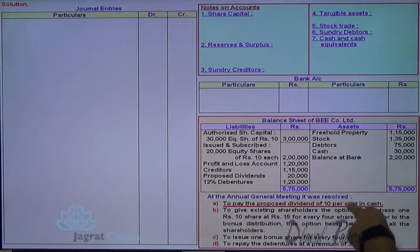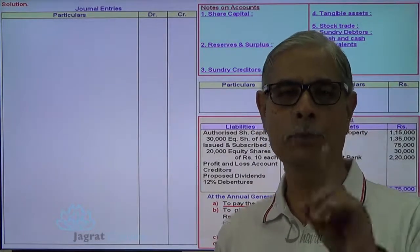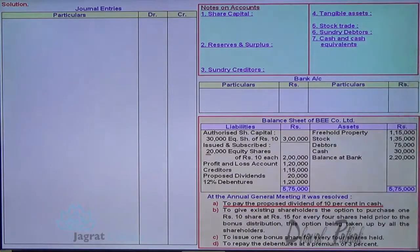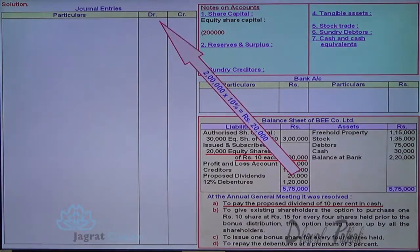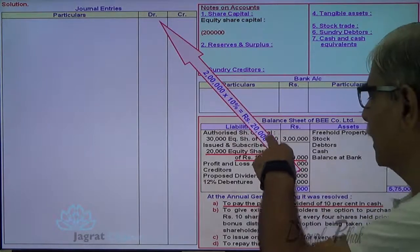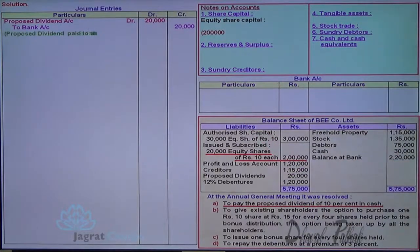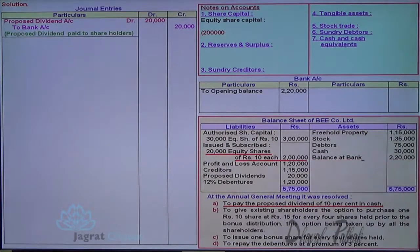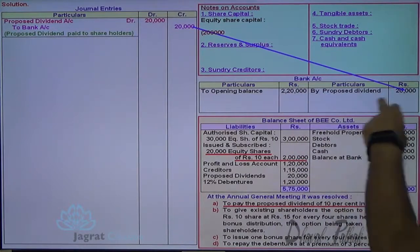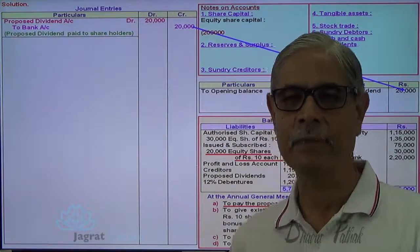To pay proposed dividend 10% in cash: proposed dividend is 20,000. Share capital of 2,00,000 into 10% equals 20,000, and this proposed dividend of 20,000 is given as a liability. So, proposed dividend account debit to bank account credit — being proposed dividend paid. Bank balance is 2,000; from this, 20,000 is being paid, so write 20,000 on the credit side. This is how the first entry is recorded.